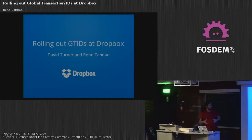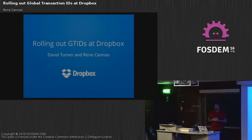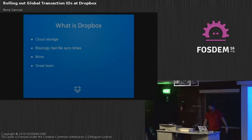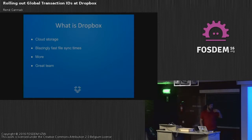This presentation is the same one we had at MySQL Overwork, presented by me and a colleague. Unfortunately he couldn't come here, so I'm giving the original slides. We're going to describe how we rolled out GTID at Dropbox. Dropbox is a cloud storage service, which most of you probably already know, with a lot of interesting technology.